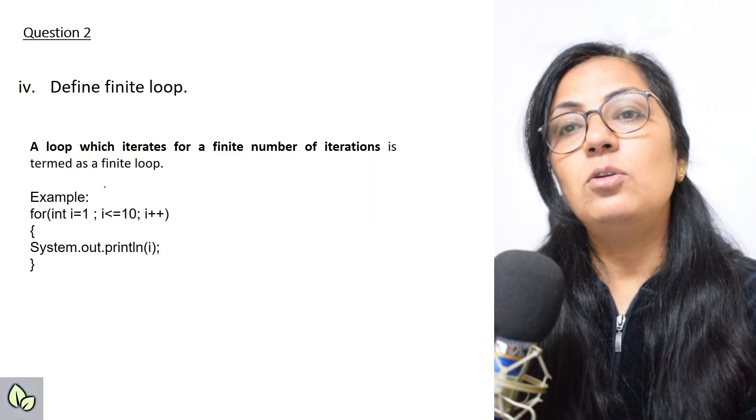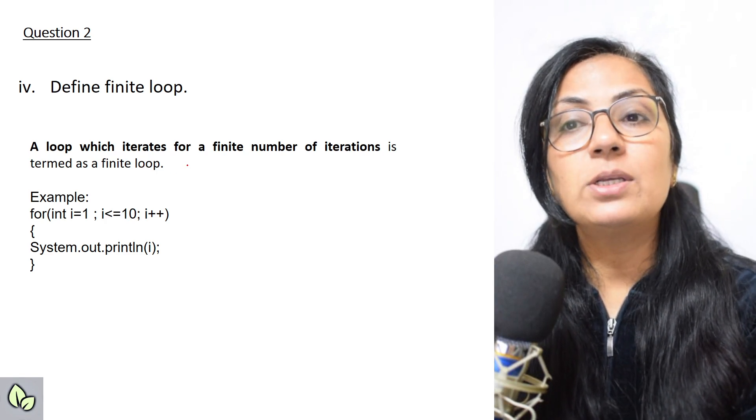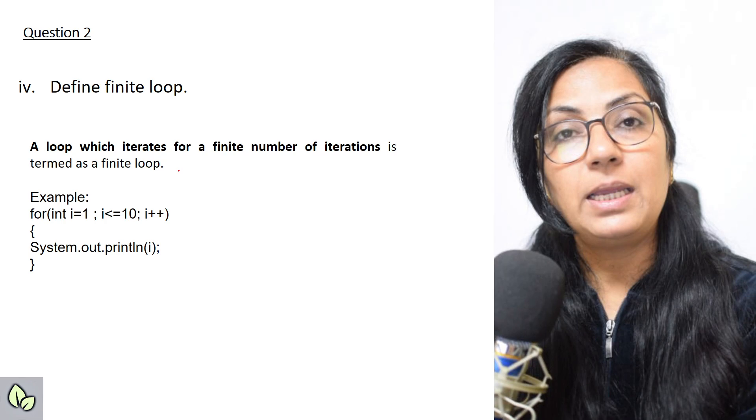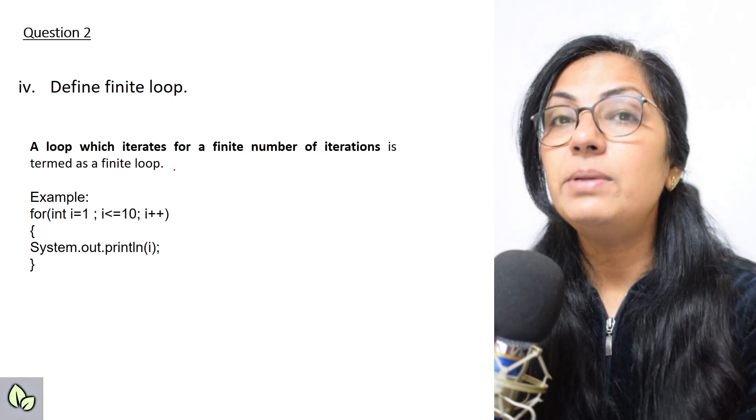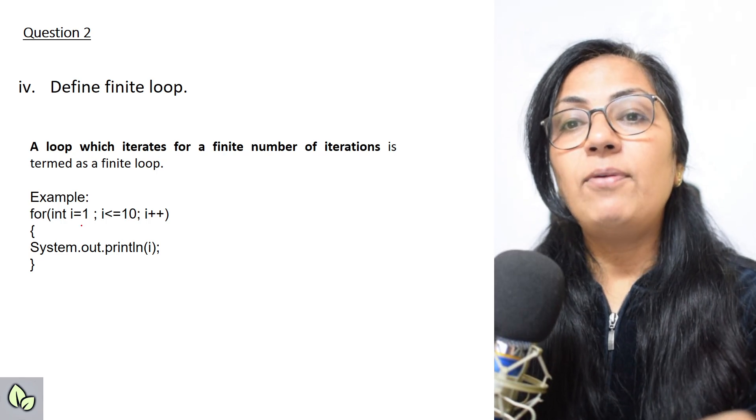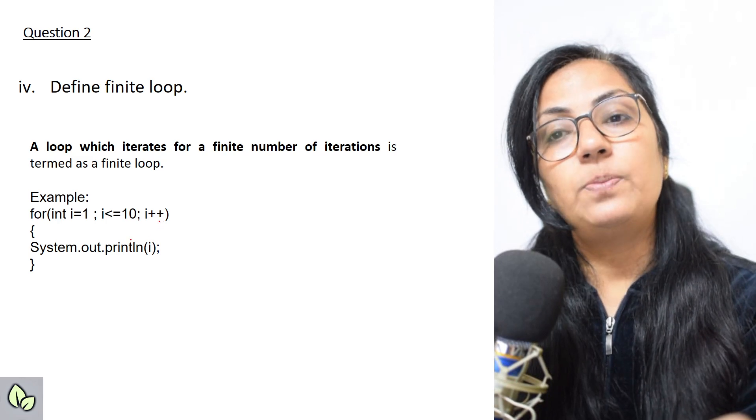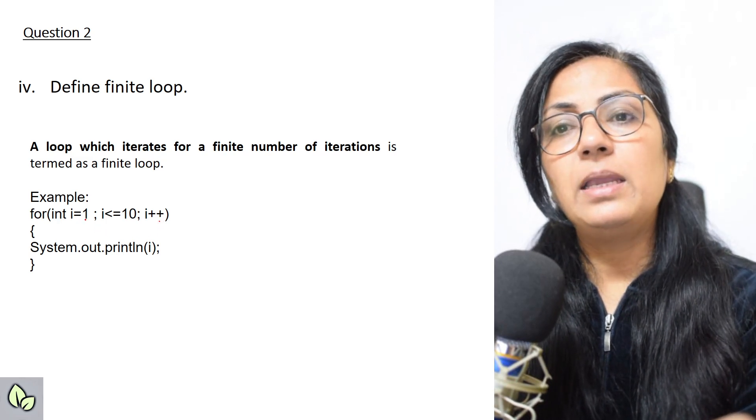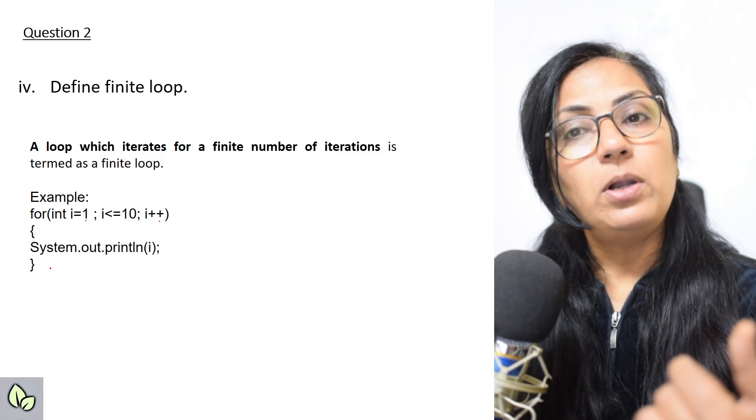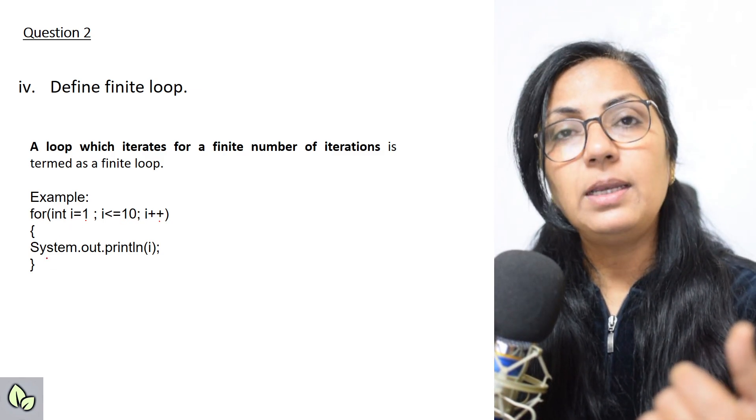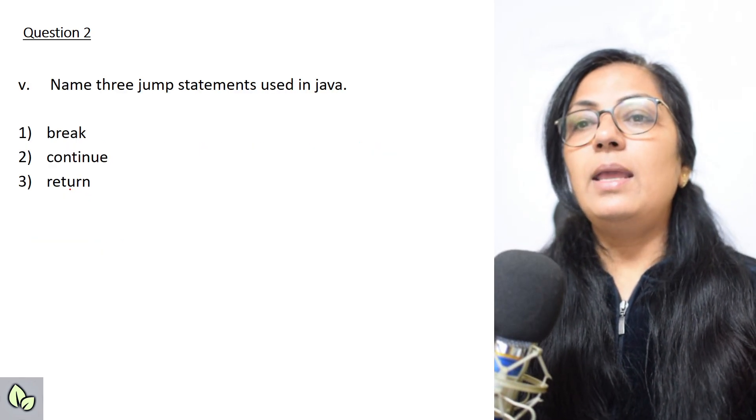The next one: define finite loop. A loop which iterates for a finite number of iterations is termed as a finite loop. Finite means fixed, infinite means unlimited. Like here, for int i equals to 1, i less than equals to 10, i plus plus, this is finite loop. I's value will start at 1 and go till 10. Accordingly, the body of the loop will be executed. So finite means fixed number of iterations.